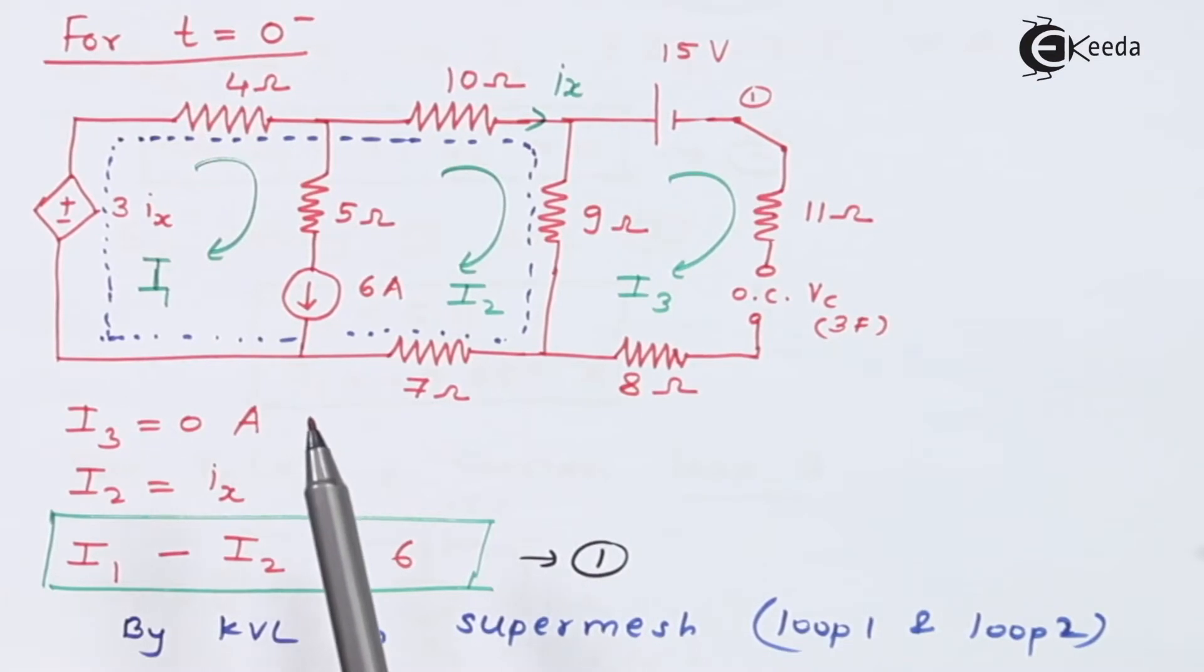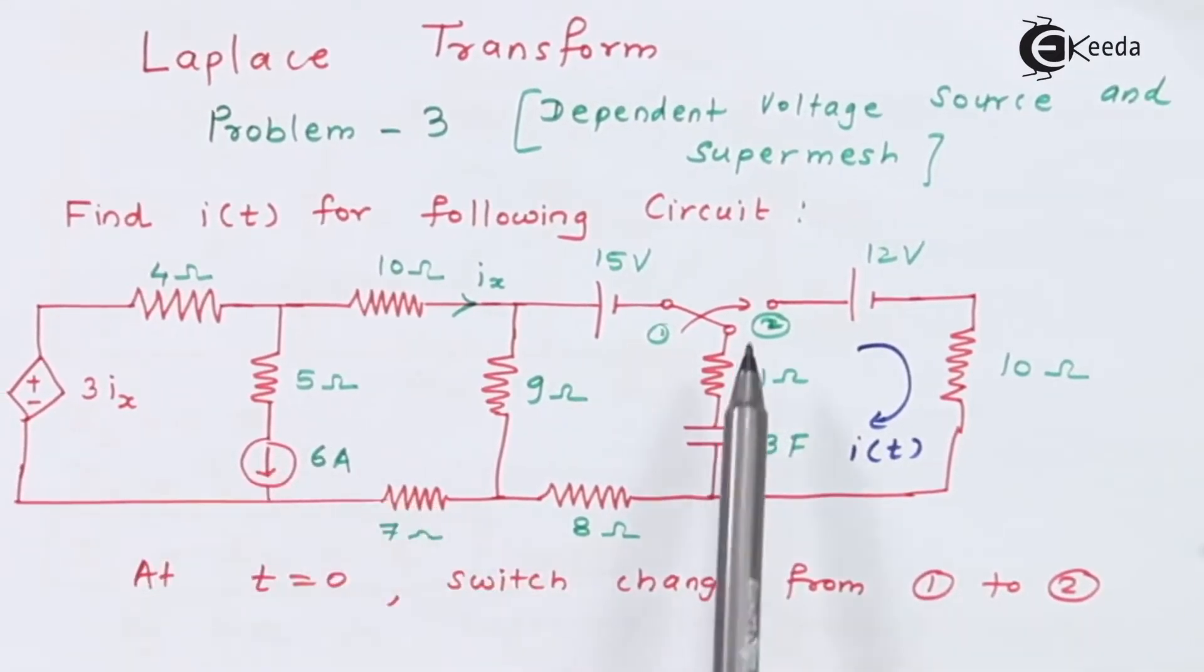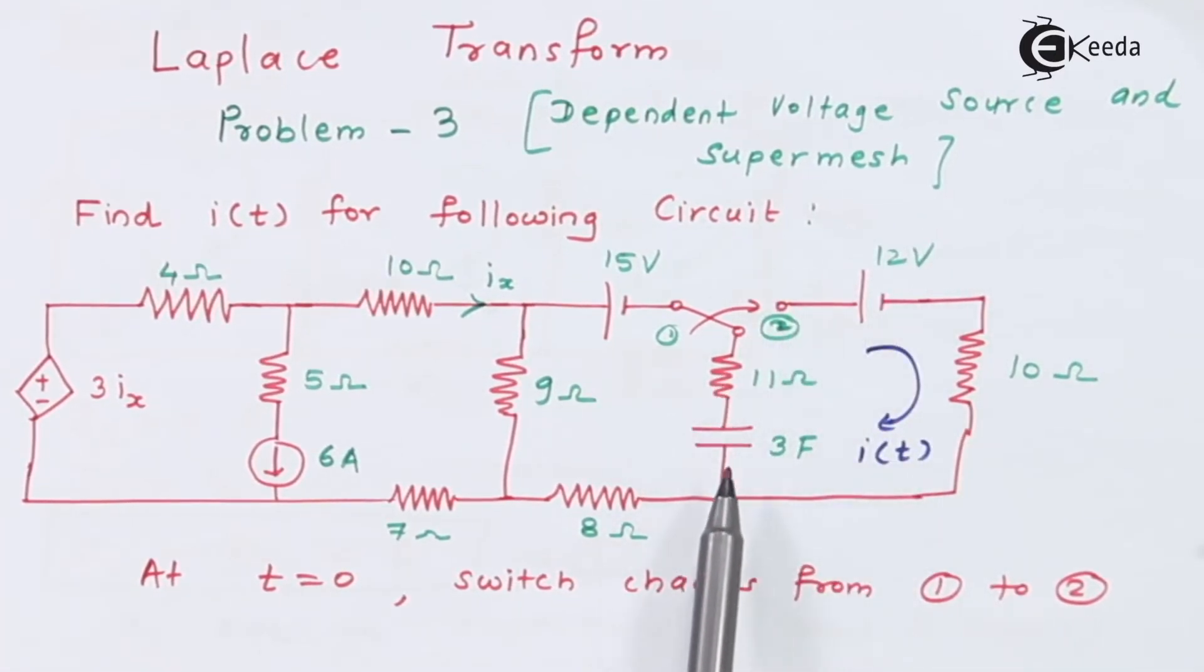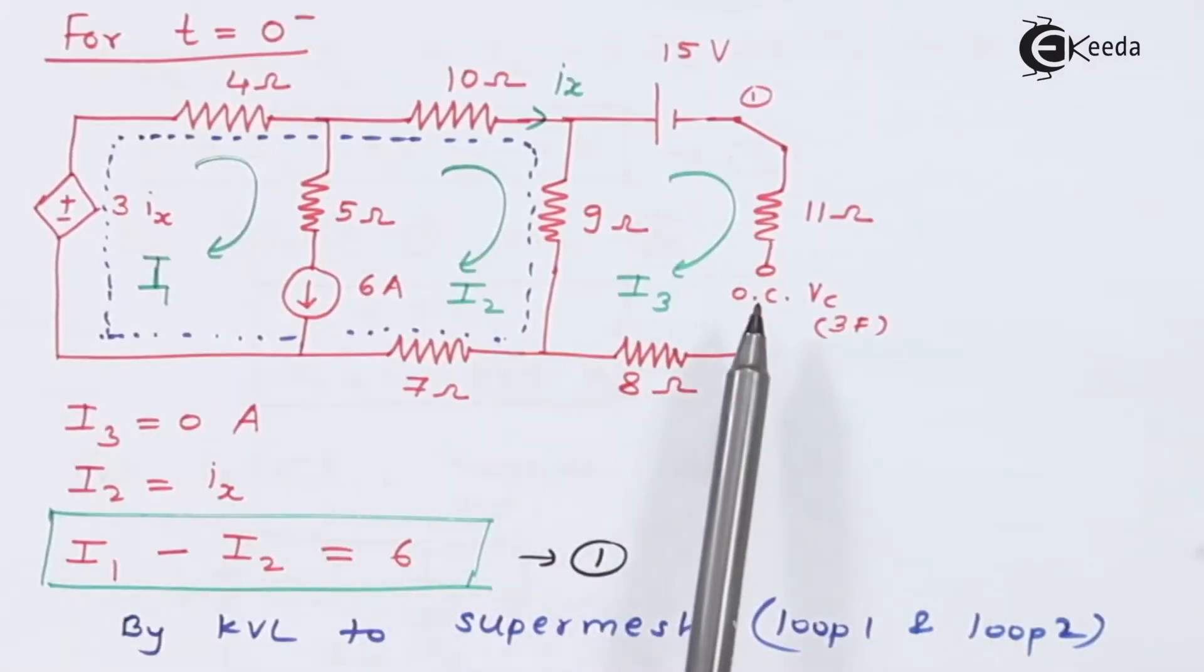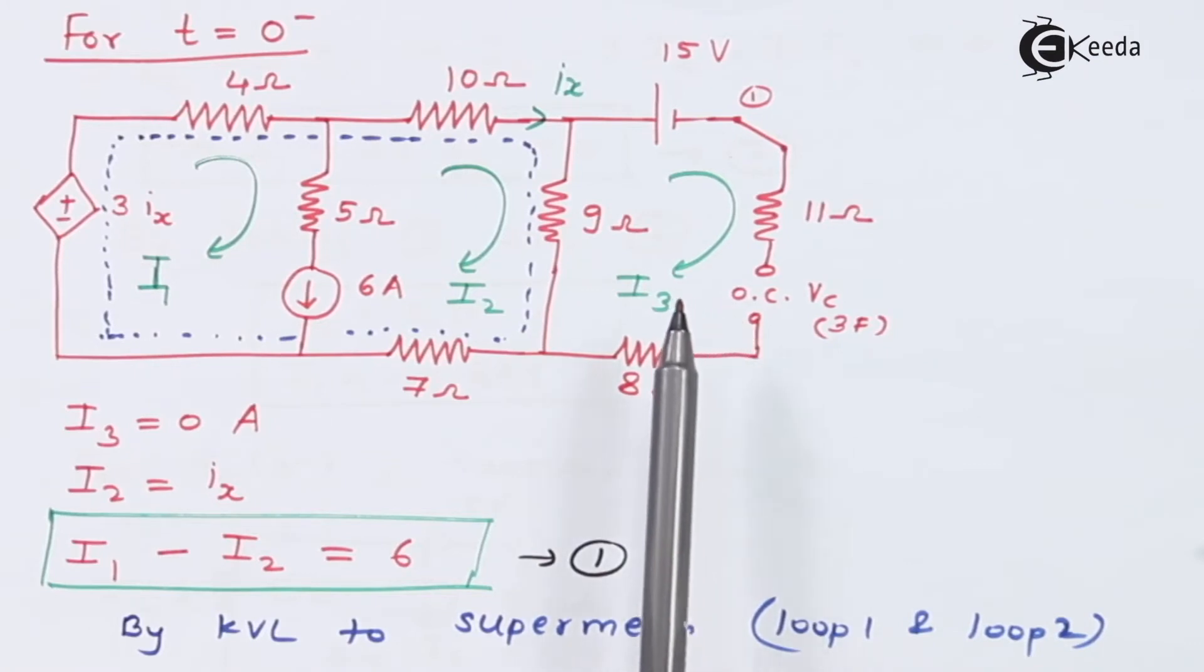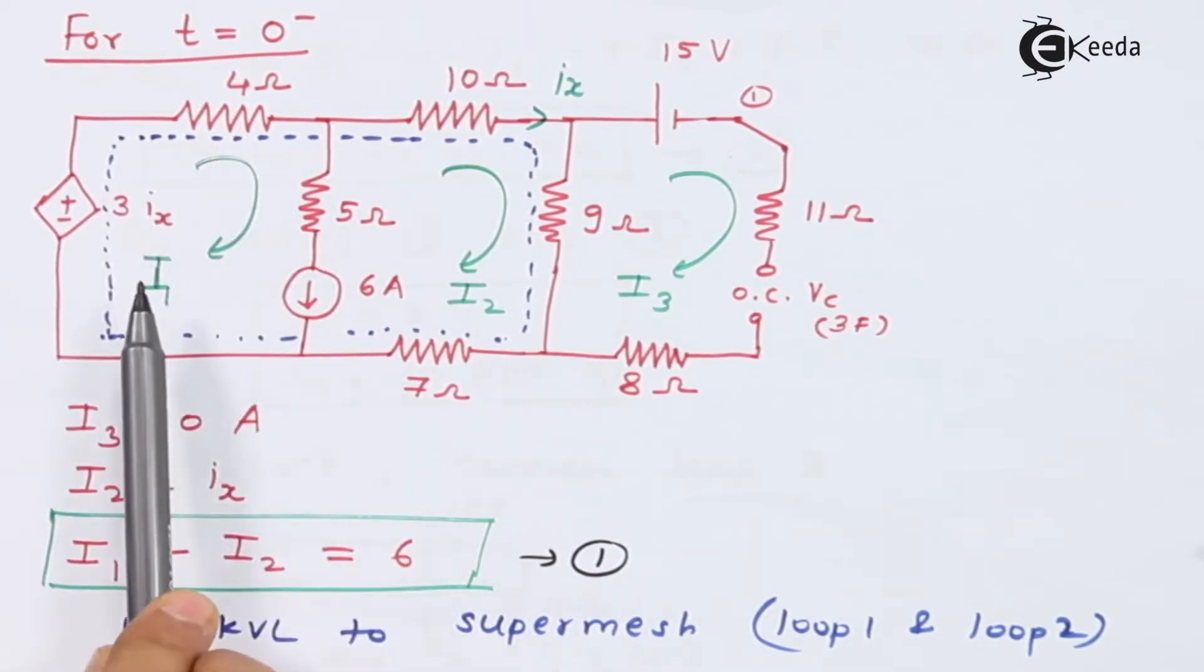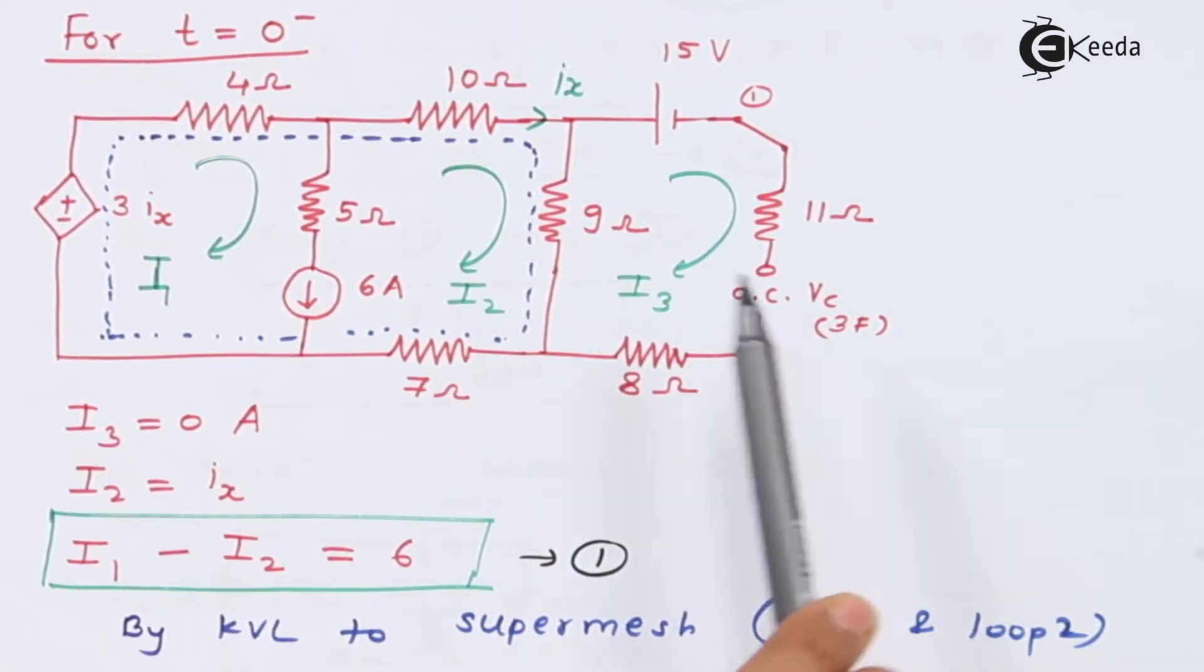So here I have drawn the diagram and solved also. At t equal to 0 minus, this circuit is like this. You can see the right hand side part with 11 ohm resistance and 3 farads capacitor is not written. Now we are replacing this capacitor with open circuit. The reason is the circuit is in steady state and capacitor will act as open circuit. This is a dependent voltage source. I have called this I1 for loop 1, I2 for loop 2, and I3 for loop 3. Because here there is open circuit, this I3 is 0 amperes.